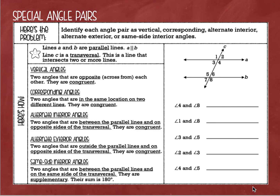Identify each angle pair as vertical, corresponding, alternate interior, alternate exterior, or same side interior angles. First of all, lines A and B are parallel lines. Parallel means that these two lines are never going to intersect — they run alongside each other like train tracks. Line C is the transversal, a third line that intersects two or more parallel lines.